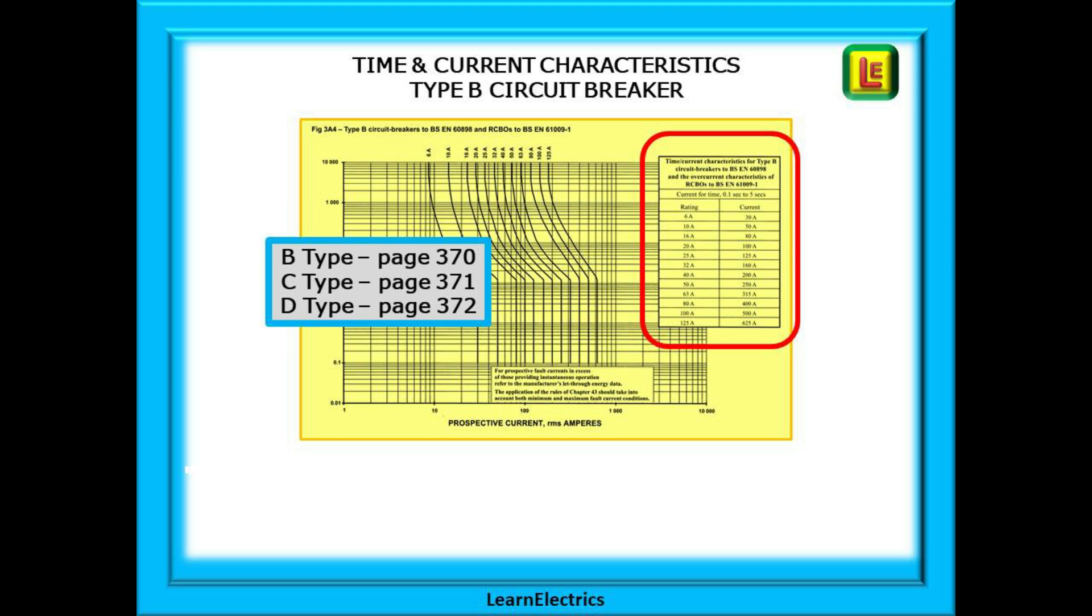We are interested in the little box on the top right of the page. The numbers have all been worked out for us. This is a B type chart. On the next page is the C type chart and the page after that is the D type chart. Make sure that you are on the correct page for the question.